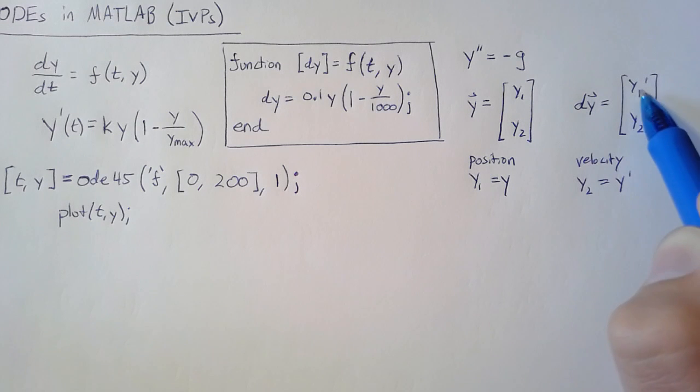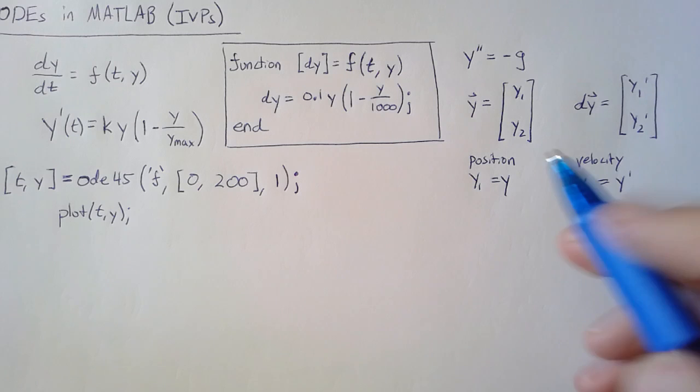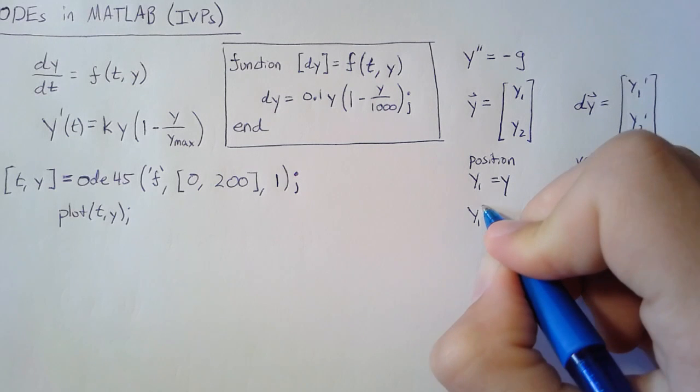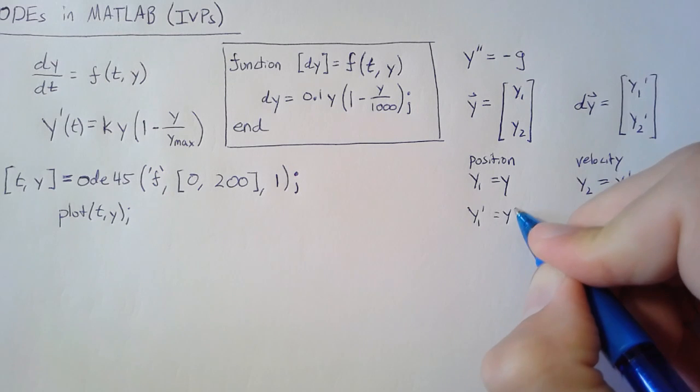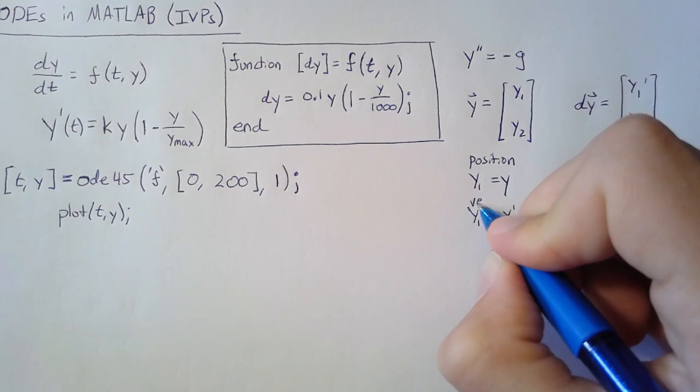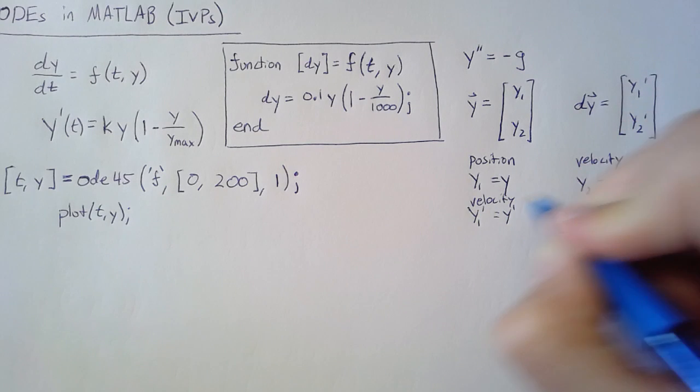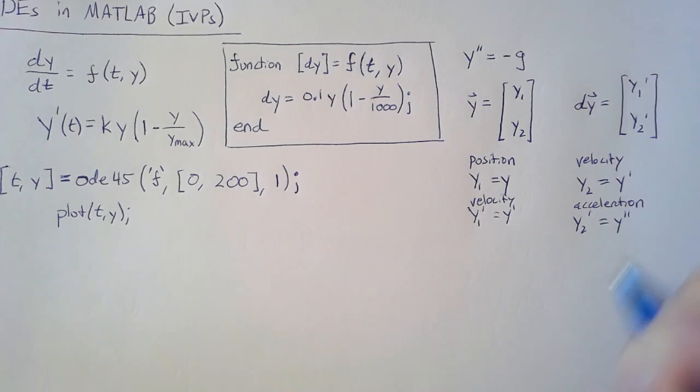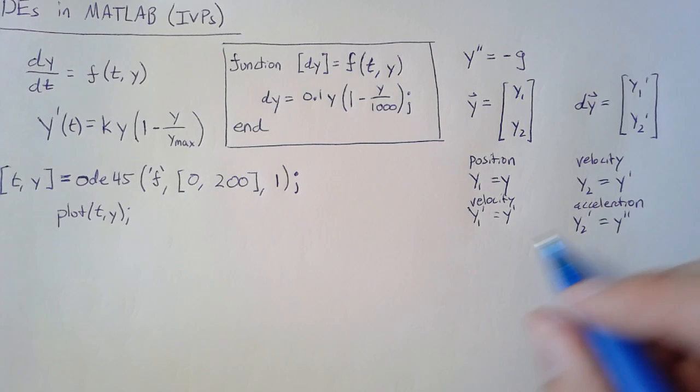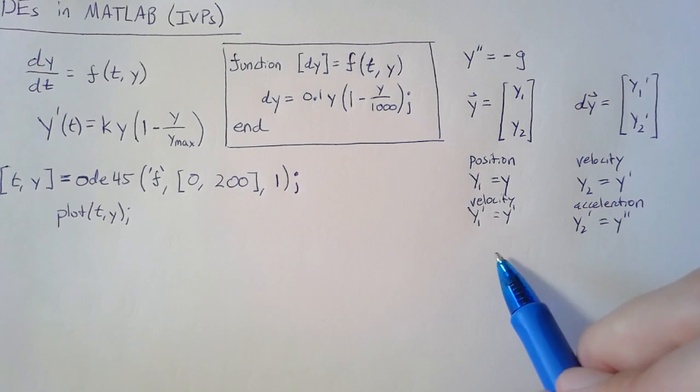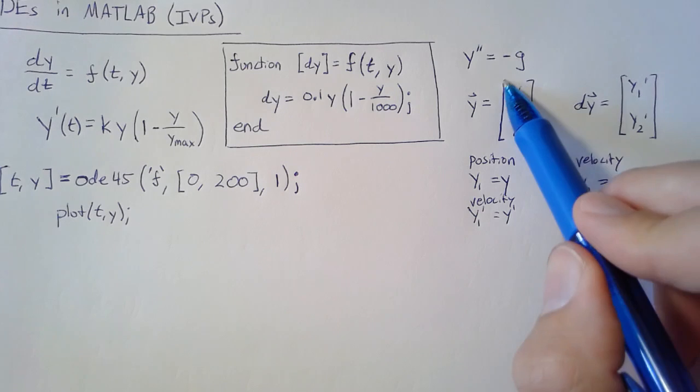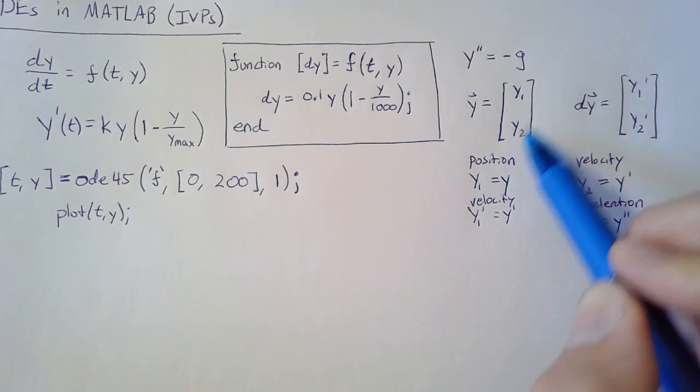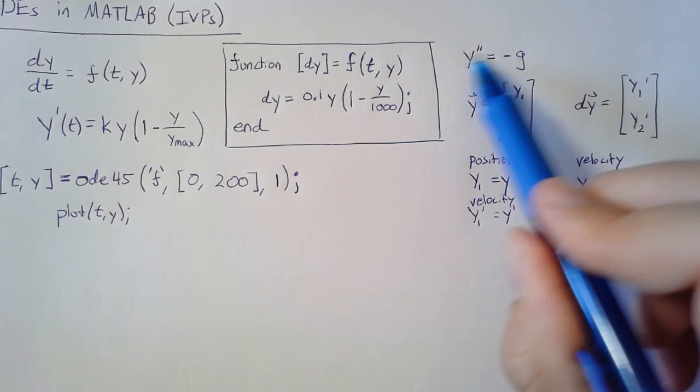So looking at this, if dy(1) is going to be y1', well, y1' is simply equal to y' or our velocity. Likewise, y2' is going to be y'' or our acceleration. Now we have all of this sorted out, and we have a way to get from this first order in two variables to a second order in just one variable.